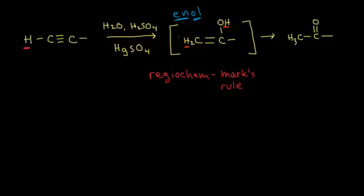The enol is not the most stable form of this molecule, so it's actually going to rearrange. We're going to get a ketone as our product — specifically a methyl ketone from a terminal alkyne. I'll show you the mechanism for this rearrangement in a few minutes. This reaction is best used when you're looking to make a methyl ketone starting with a triple bond.